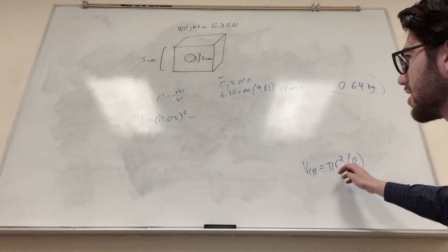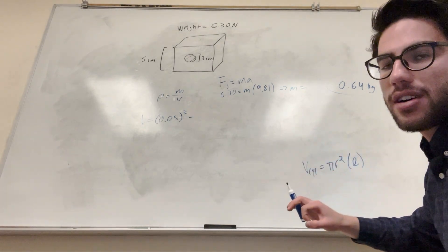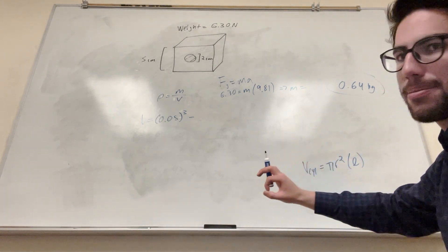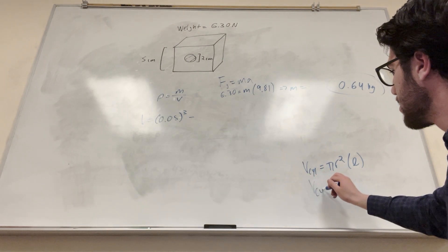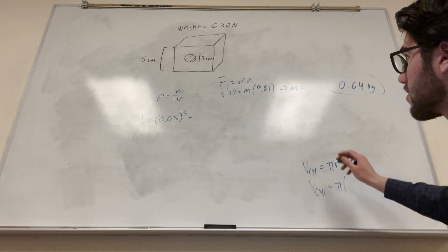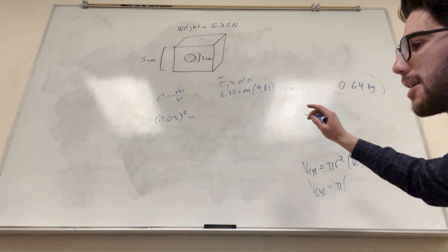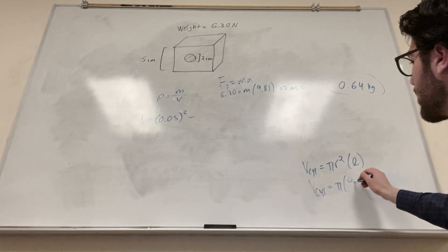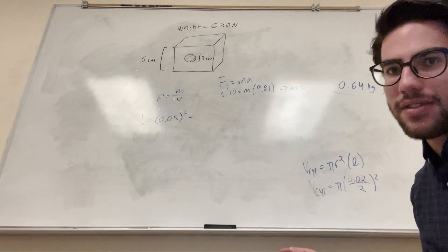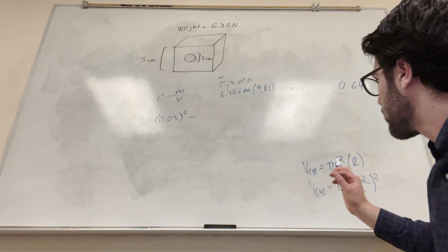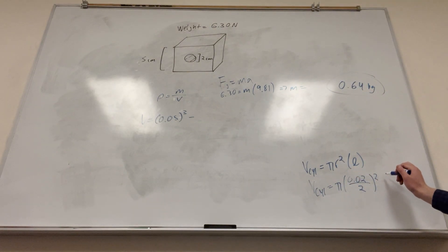So this makes sense. Pi radius squared is the area of the end, and then you multiply it by the length to get the whole volume. So we can find this is equal to pi. We know that the radius is 0.2 divided by 2, so 0.02 divided by 2. That's because that's the diameter. We need to get it divided by 2 to get the radius, and then squared for the formula. And then the length, we know it's going to be 5 centimeters, so 0.05.